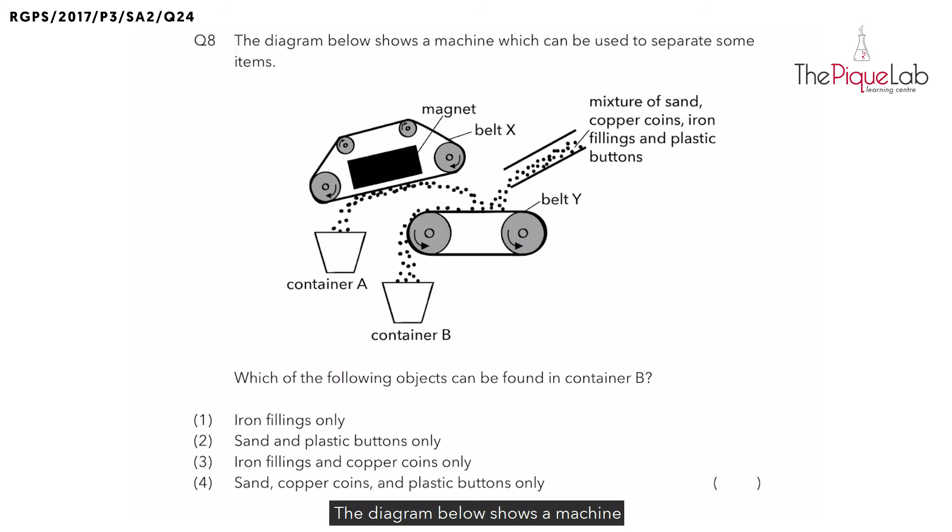The diagram below shows a machine which can be used to separate some items. We have a mixture of items here: sand, copper coins, iron fillings, and plastic buttons. Now these items are being poured down towards the machine which consists of two sets of moving belts, belt X and belt Y.